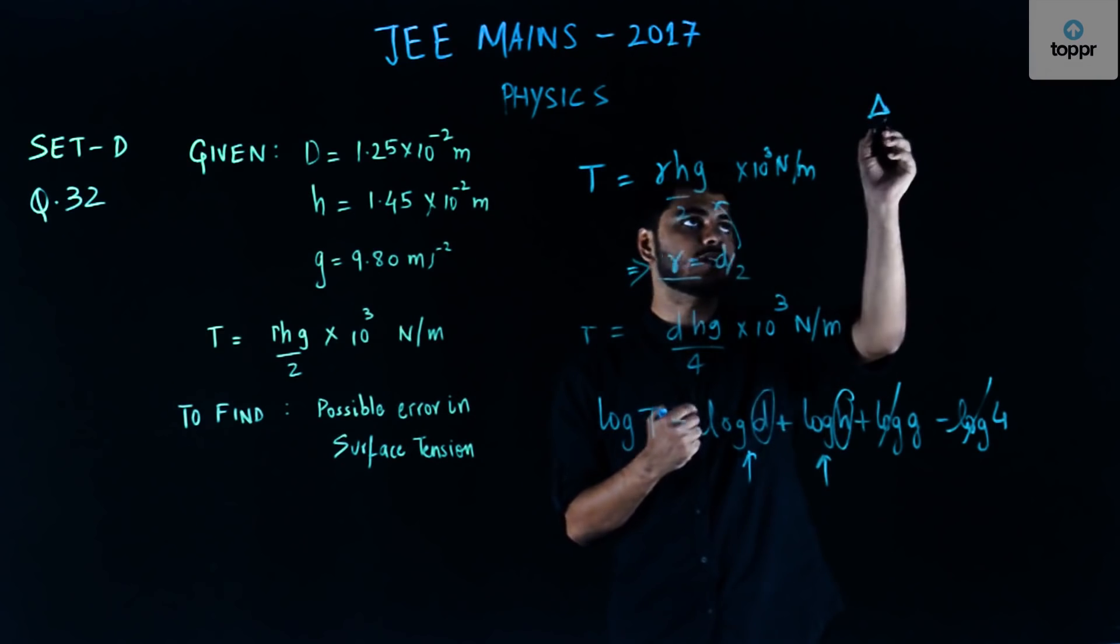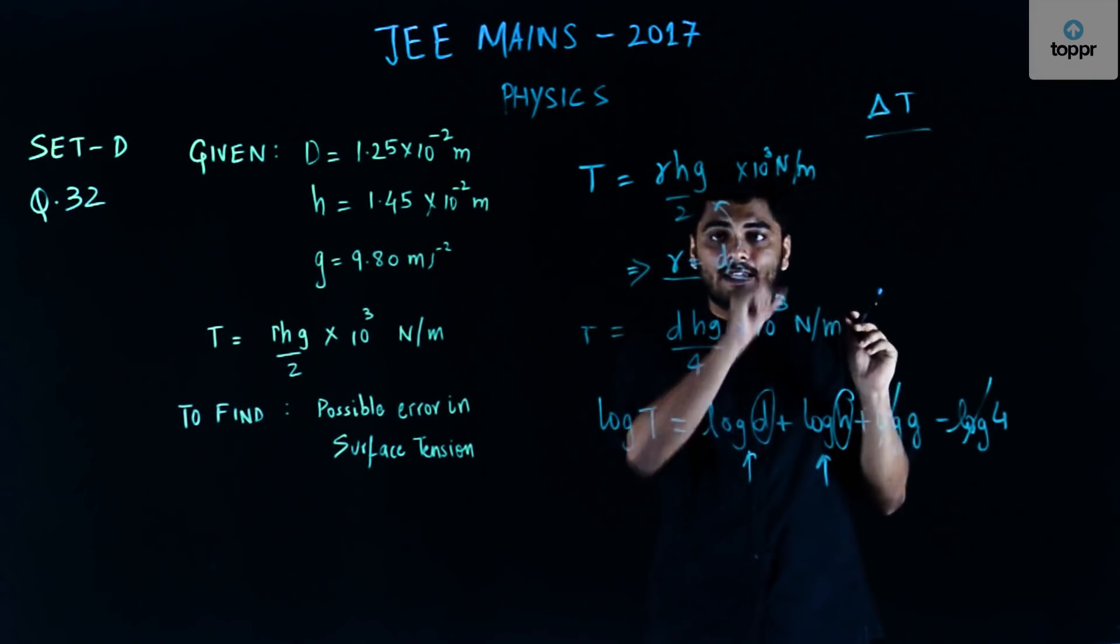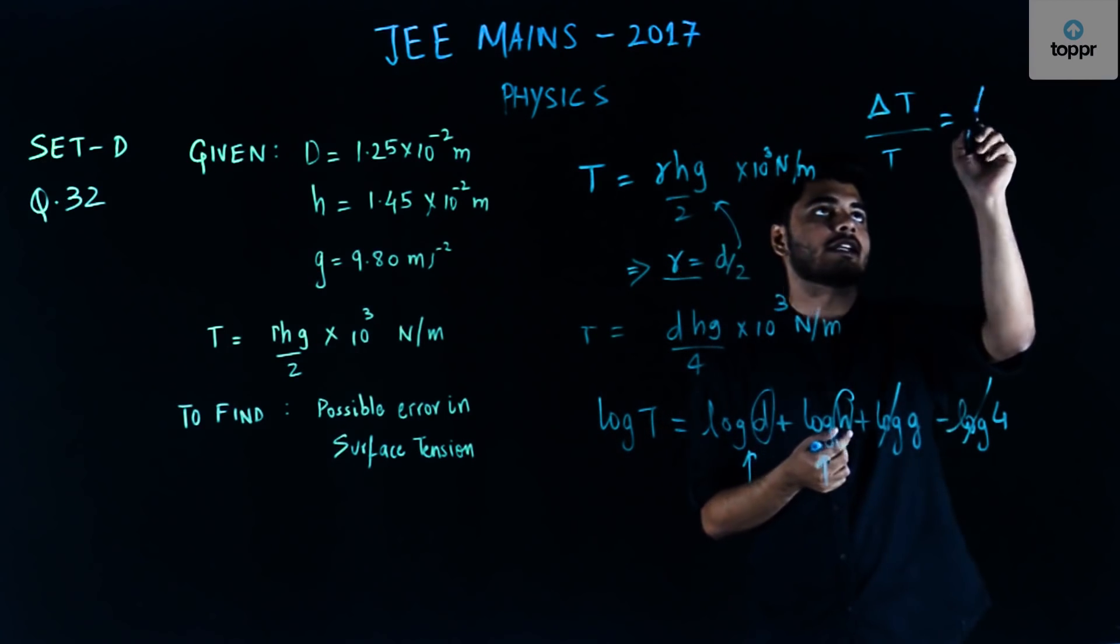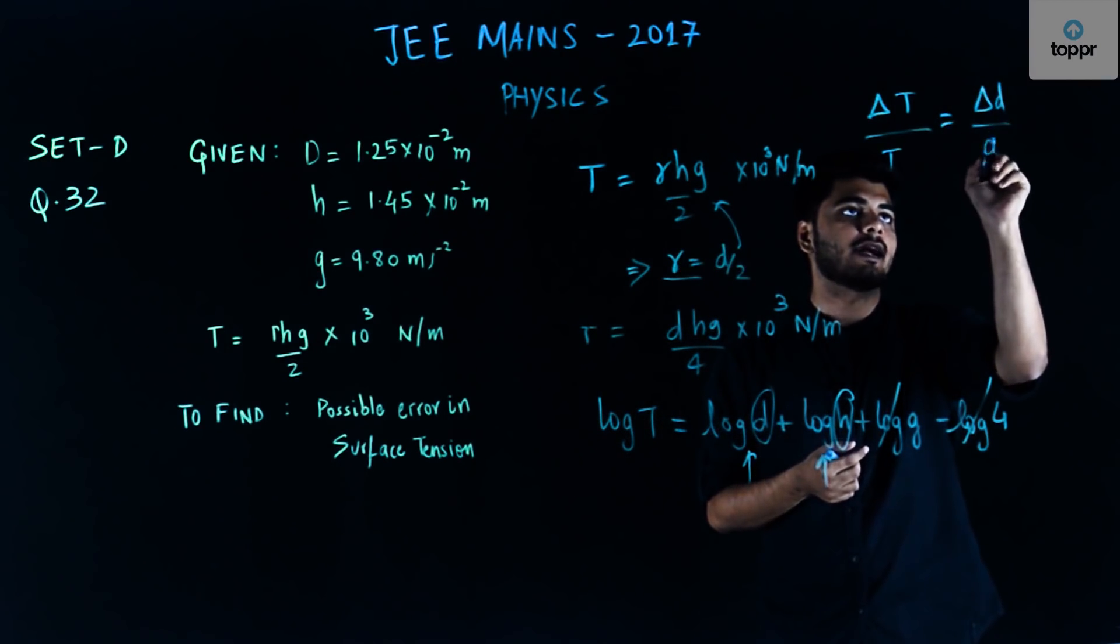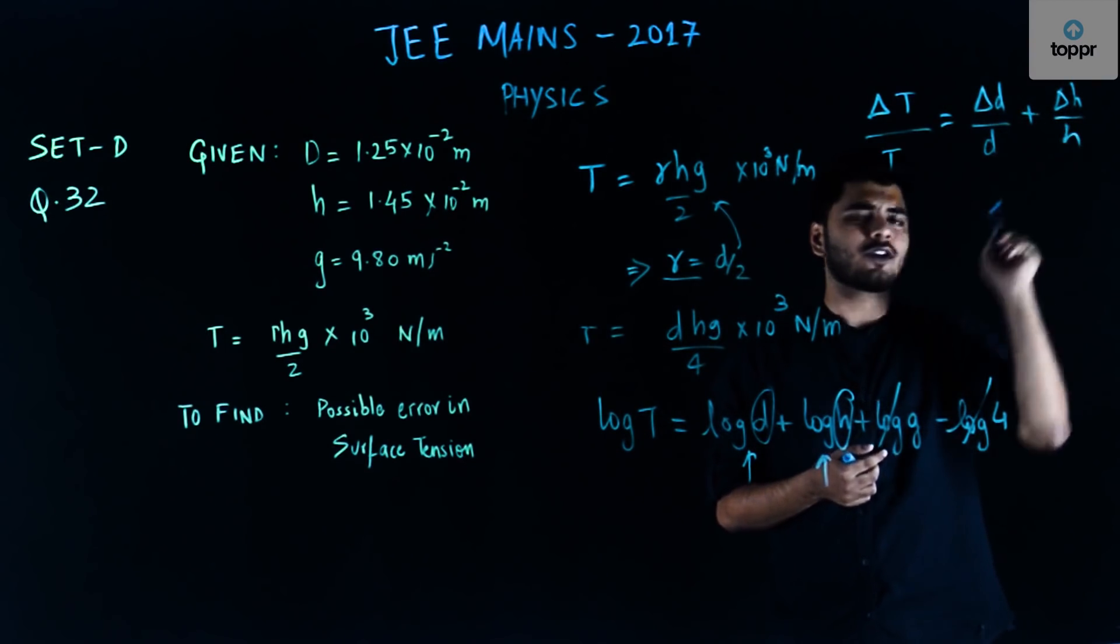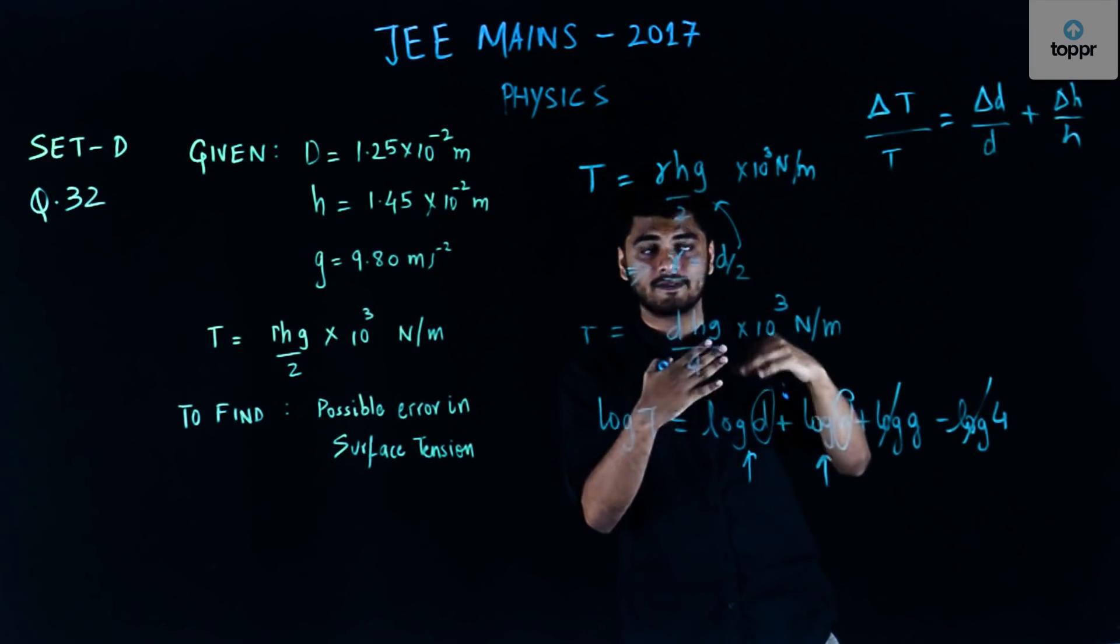So the error in T is possible only due to these two values and as we have been doing so far, log T, I can use the value of delta T, that is the error in T upon the value of T, as equals to delta D by D plus delta H by H. This is what we have been doing every time in case we need to find the error.